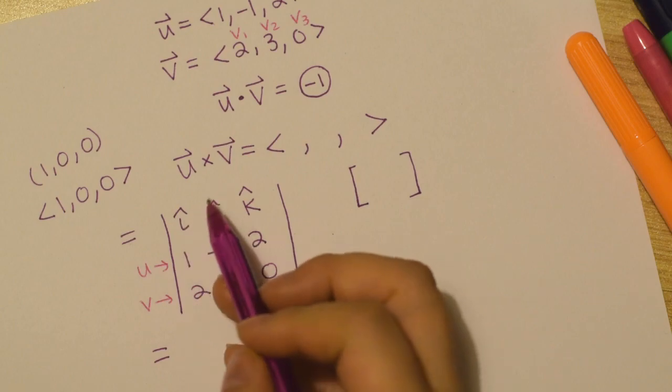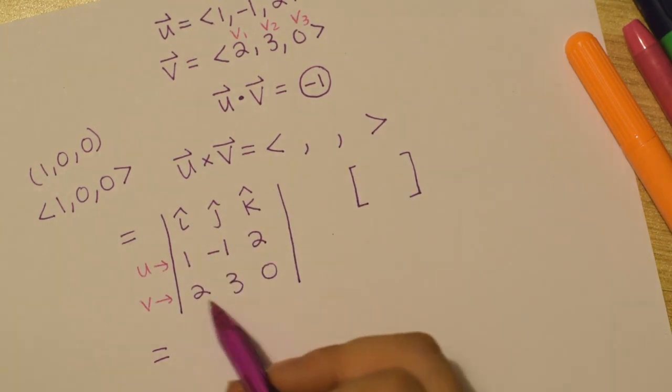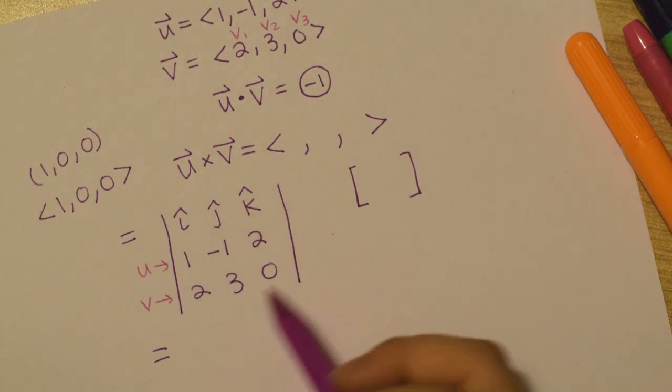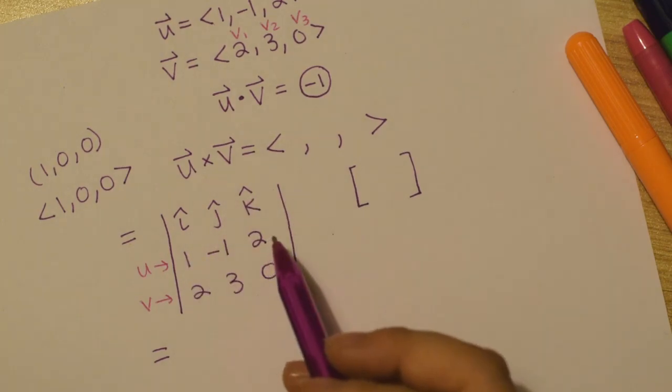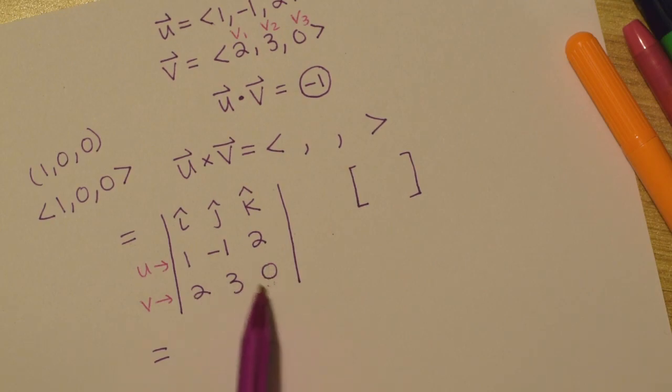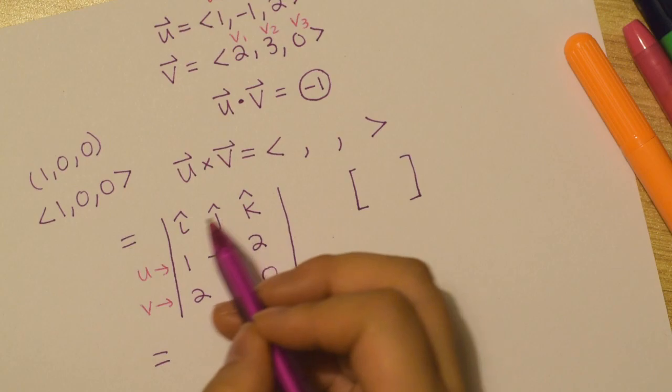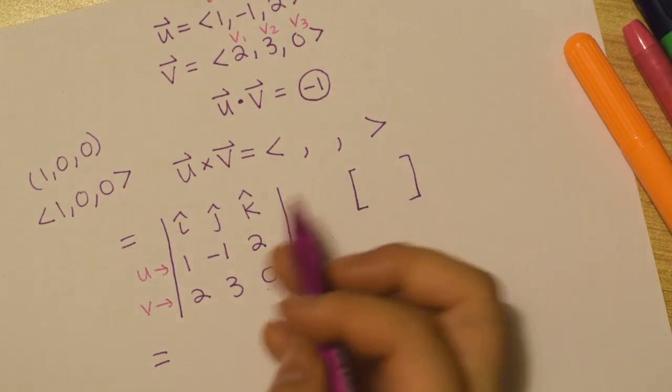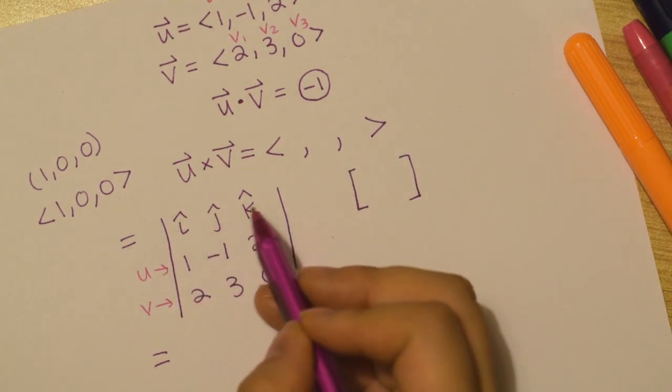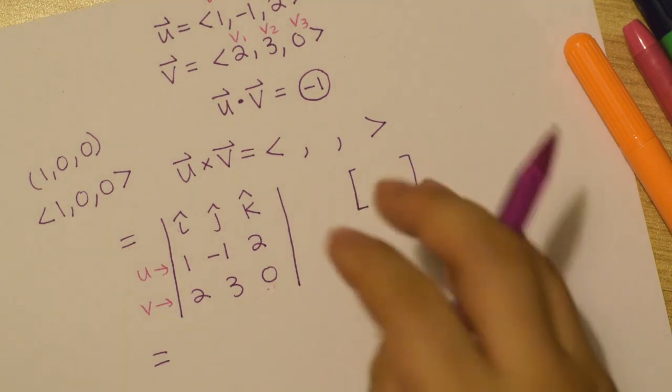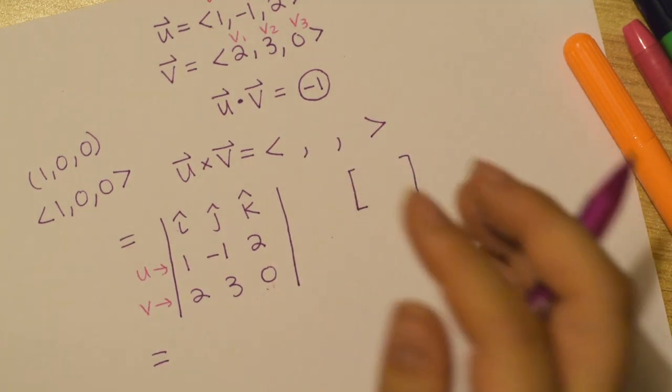So I'm actually going to expand along i, j, k if you have other shortcuts. By all means you can do that. It should all be equivalent. Like I see a 0 here in this case, and you can expand along this. Maybe save yourself, you know, an element. But to keep it general, I'm going to do i, j, k. And if you do it along i, j, k here, things kind of line up nicely.